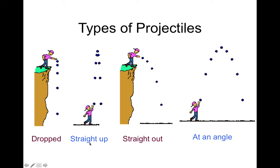Projectiles that are dropped, projectiles that are launched straight up and come straight back down, projectiles that are launched straight out and fall, or projectiles that are launched at an angle and move upward and outward at the same time.